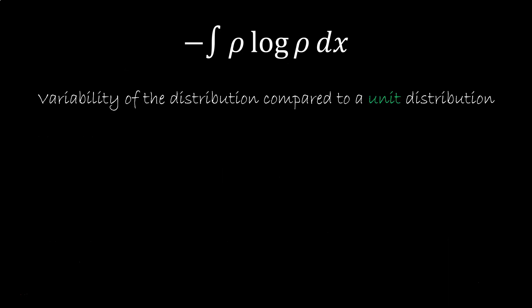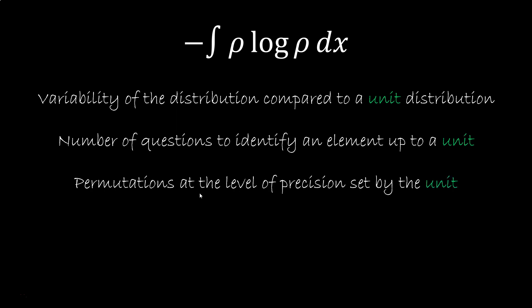To sum up, the integral of minus rho log rho is the variability of the elements within a distribution compared to a unit distribution. It's the number of questions needed to identify an element up to a unit. The log of number of permutations of large sequence at the precision set by the unit. This has two major consequences. One is that this value can be negative, and two that it is unit dependent, and both are very important to understand.